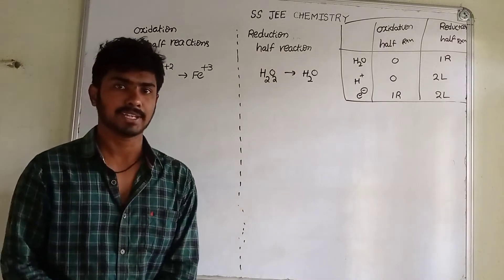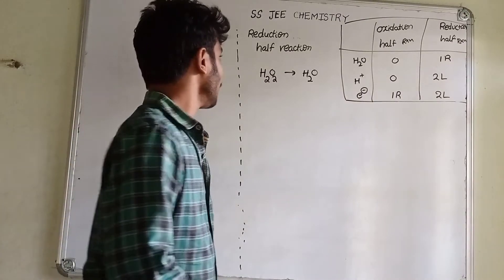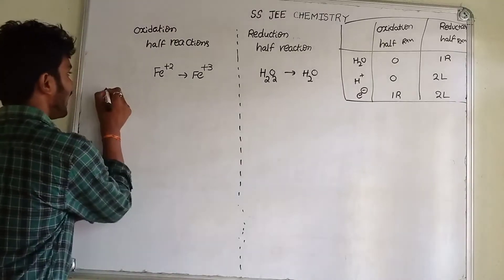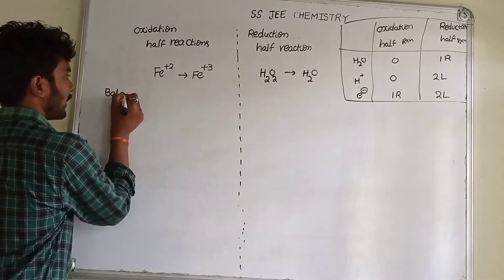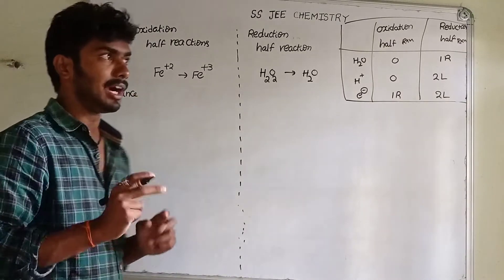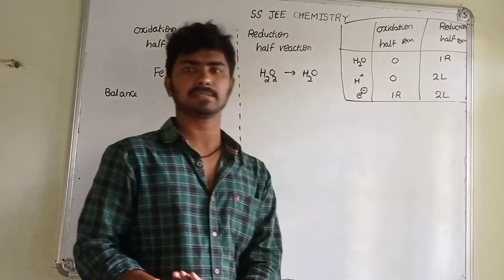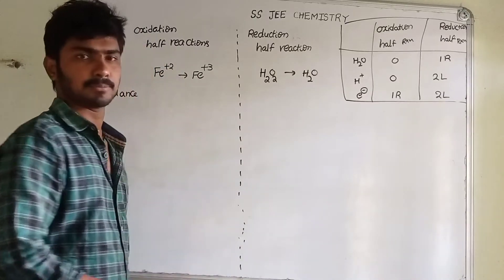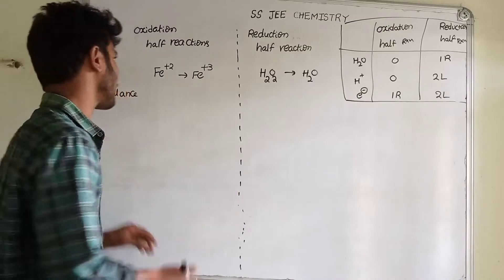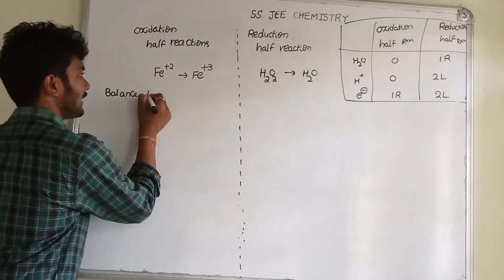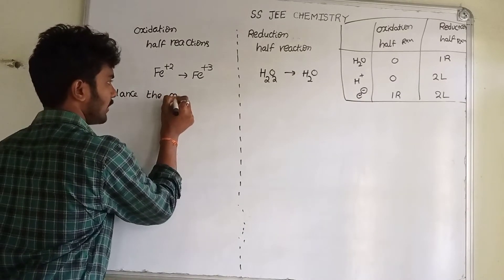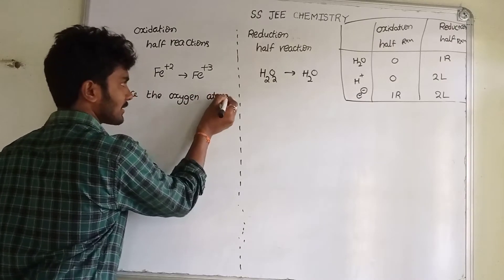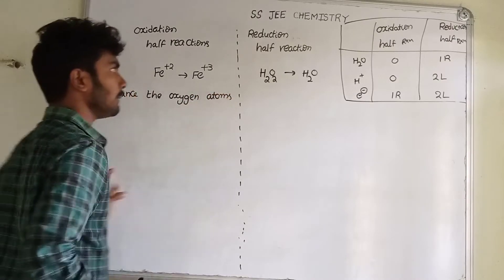Atoms balance. Now we balance the atoms. Next, balance the oxygen atoms. We balance the oxygen, hydrogen, and the remaining atoms. Then we balance the oxygen atoms. When you balance the oxygen atoms, the box starts.